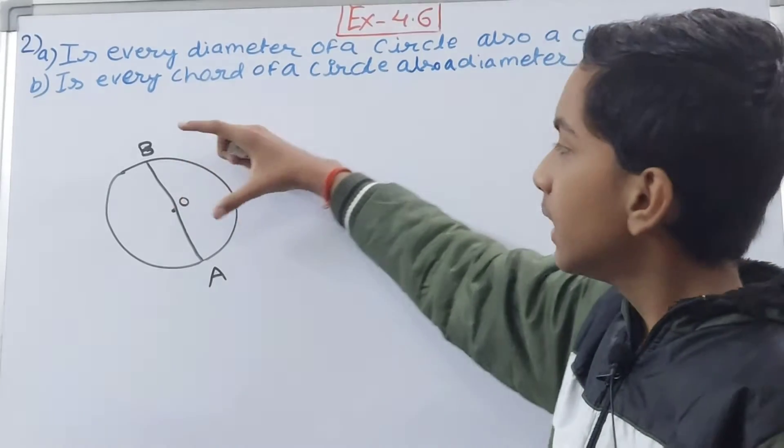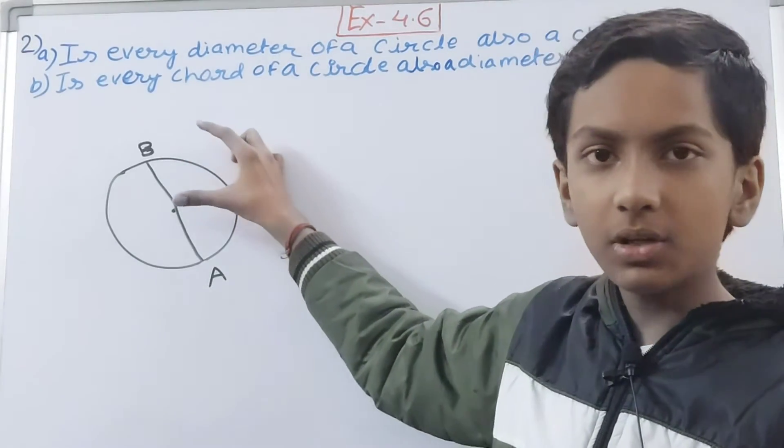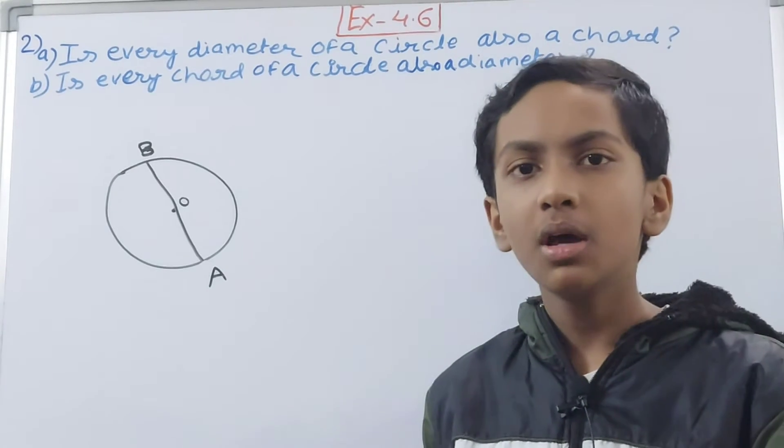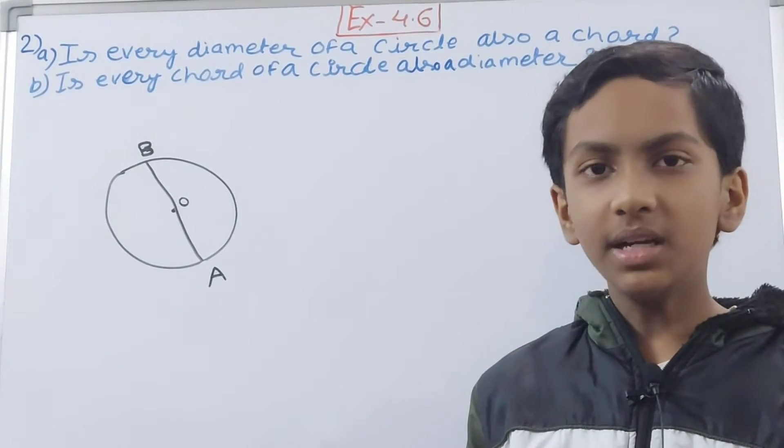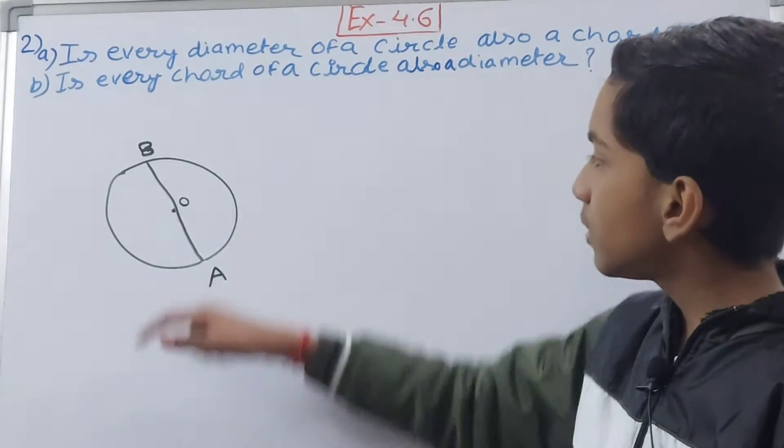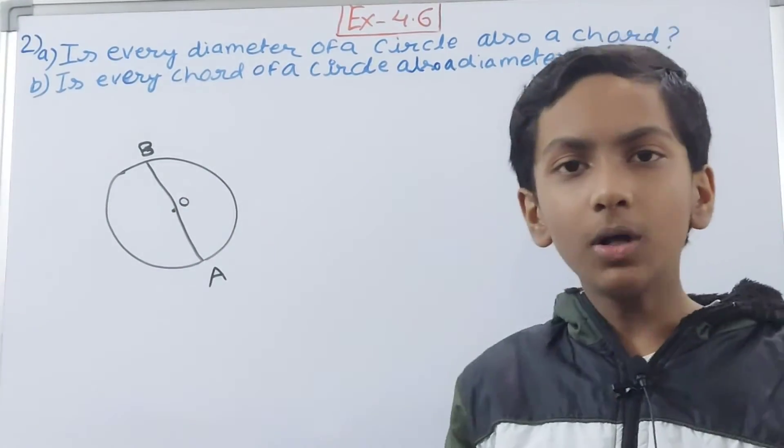Your diameter is also connecting this point A here and this point B here on the boundary, right? So basically it is fulfilling all the two conditions. Third is that it is not necessary that it should pass through the center, but it can pass through the center, right?